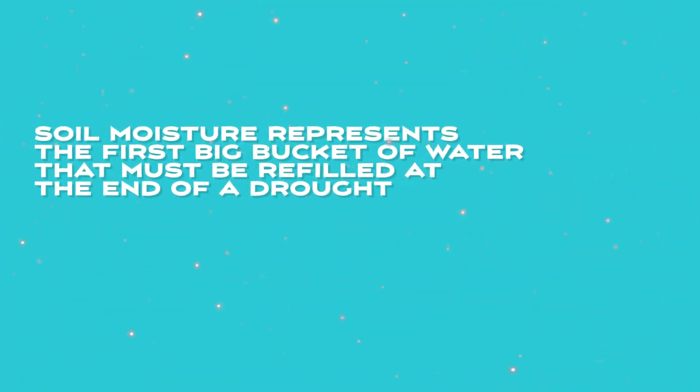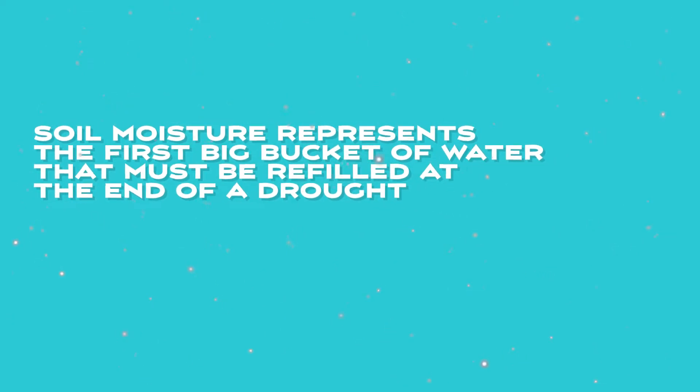Importantly, soil moisture represents the first big bucket of water that must be refilled at the end of a drought. Dry soils can hold a lot more moisture than wet soils. This is why sometimes when it does rain during a drought, you don't see an associated large amount of river flow — because the soil has soaked up the majority of that rainfall. This is why large rainfall events that occur during drought periods do not have an equally large impact on river and reservoir levels.